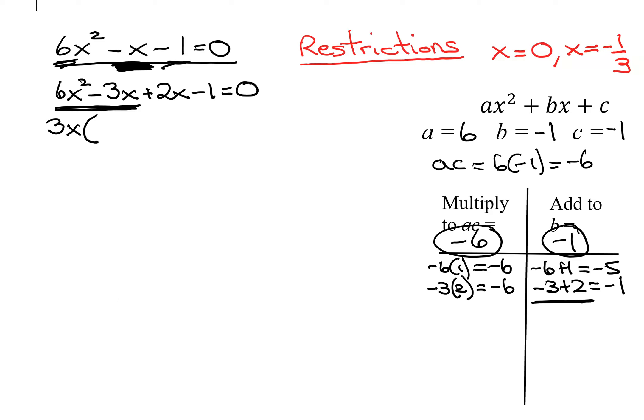Pull that out. And 3x divides into 6x squared 2x times. If you pull a 3x out of a negative 3x, it has to leave something. You need a placeholder. So it's going to be negative 1.